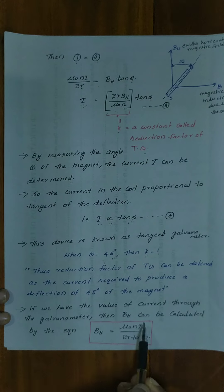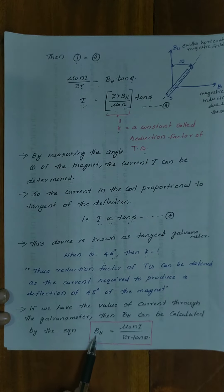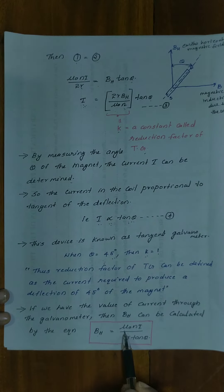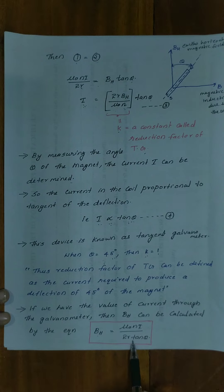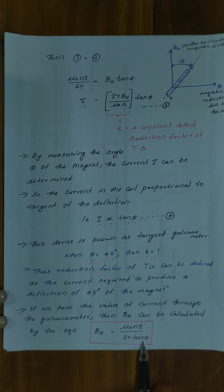If we know the value of current through the galvanometer, then BH can be calculated by the equation BH is equal to mu₀NI by 2R into tan theta.